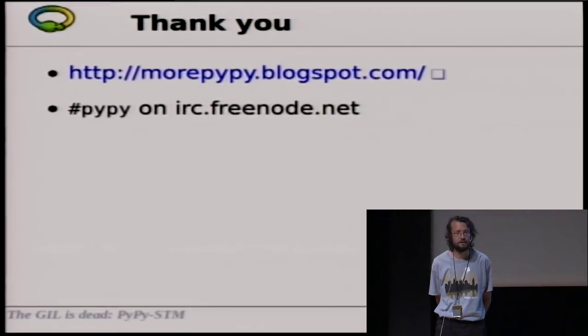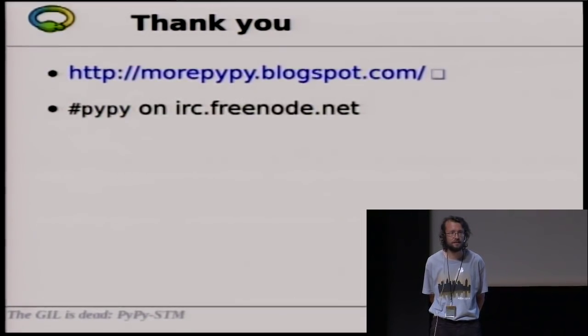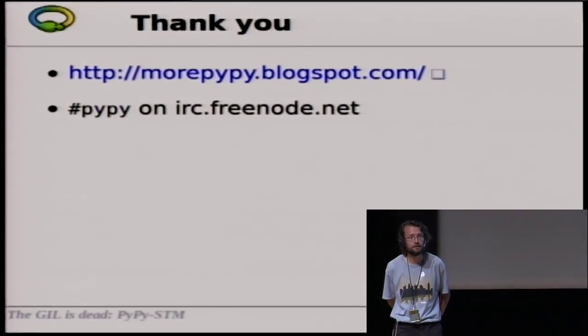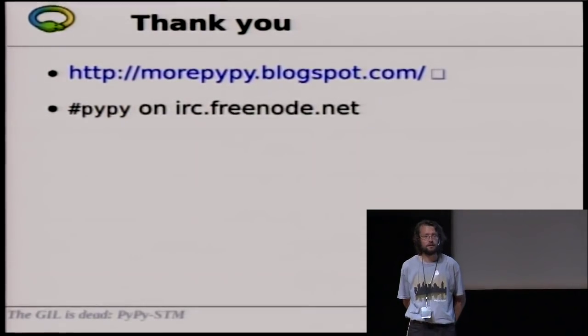Question: Would you merge PyPy STM into the main PyPy branch someday — will it become the default? Answer: Excellent question, I don't know so far. The problem is it is between 25 and 40 percent slower on a single thread. But in PyPy it's possible to think about more advanced ways where the interpreter switches between non-STM and STM compiled machine code, so it's possible that at some point it will be merged, yes.